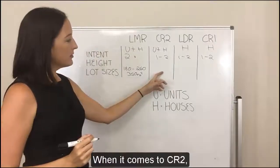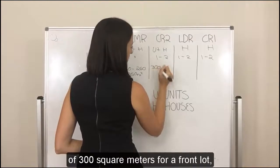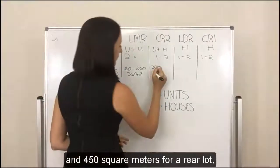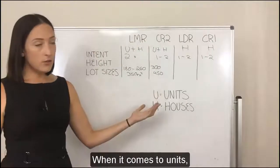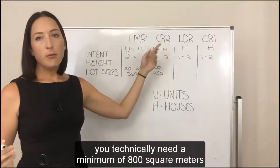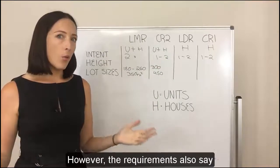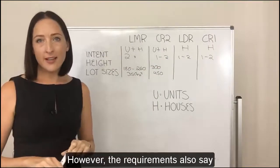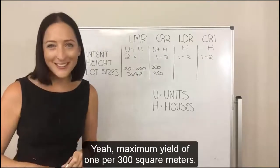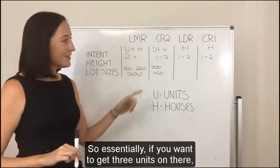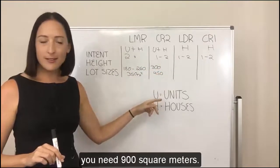When it comes to CR2, you need a minimum of 300 square metres for a front lot and 450 square metres for a rear lot. When it comes to units, you technically need a minimum of 800 square metres before you can do units or townhouses. However, the requirements also state a maximum yield of one unit per 300 square metres, so if you want three units, you need 900 square metres.